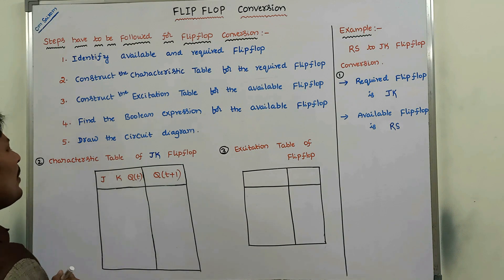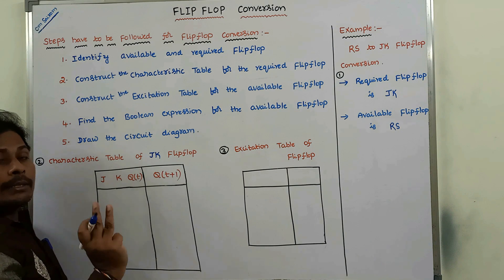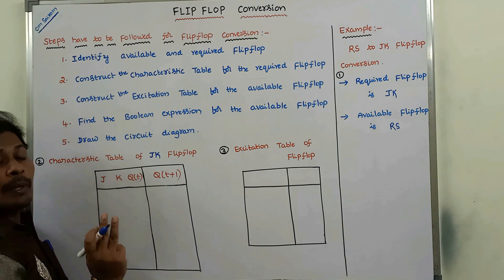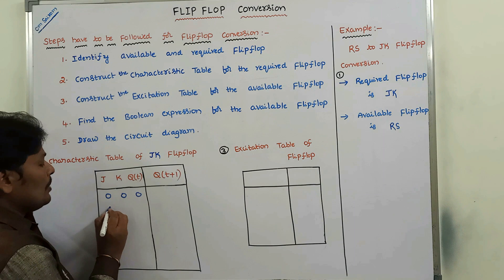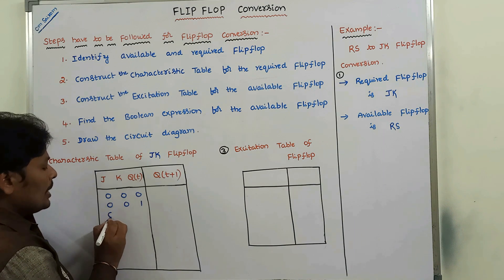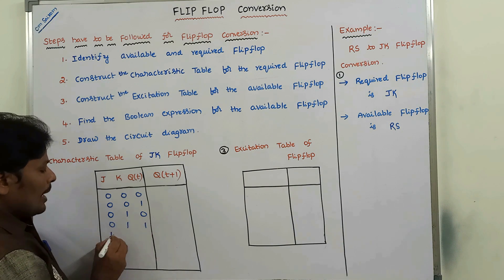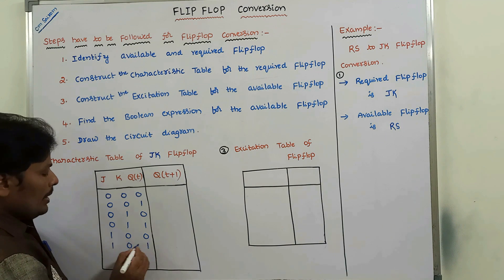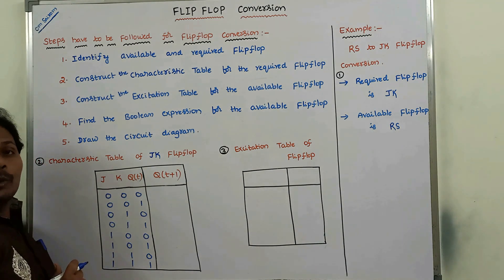How many inputs are there? Three inputs. With three inputs, how many possible input combinations? Eight possible input combinations: 000, 001, 010, 011, 100, 101, 110, 111. For each and every possible input combination, we have to find out the next state.